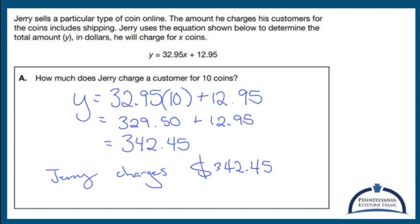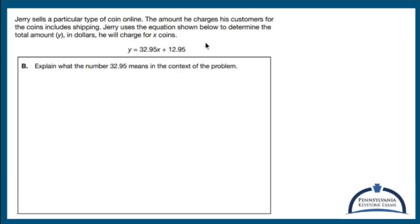Jerry sells the same exact thing. Explain what the number 32.95 means in the context of this problem. All right. Well, if X stands for coins, and I were to make believe that X is one, that means each coin costs $32.95.